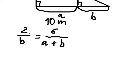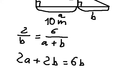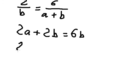So we cross multiply and simplify. We have 2a plus 2b equals 6b. Moving terms, we have 2a equals 4b. We divide by 2, so a equals 2b.